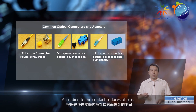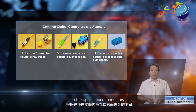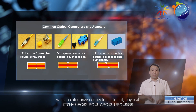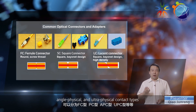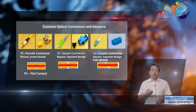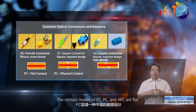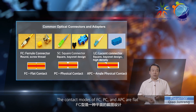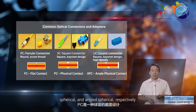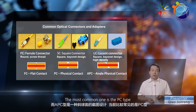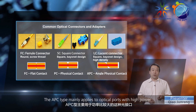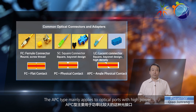According to the contact surfaces of pins and the optical fiber connectors, we can categorize connectors into flat, physical contact, angle physical contact, and ultra-physical contact types. The contact modes of FC, PC, and APC are flat, spherical, and angled spherical, respectively. The most common one is the PC type. The APC type mainly applies to optical ports with high power.